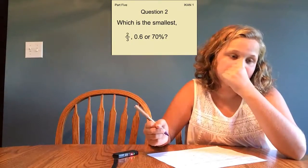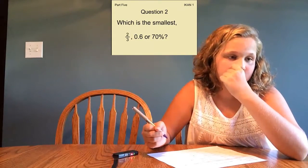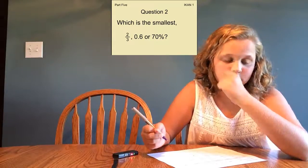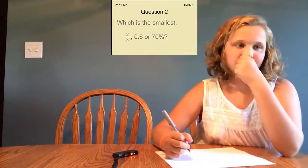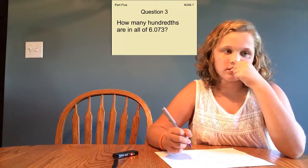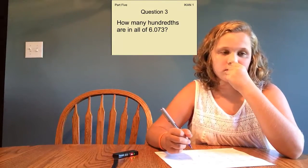Which is the smallest? 2 3rds, 0.6, or 70%. How many hundredths are in all of 6.073?